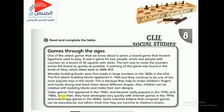The last game is video games — and all of us love video games. Video games first appeared in the 1950s and became really popular in the 1970s and 1980s. Since then, they've developed quickly, with Internet games in the 1990s and mobile app games in the 2000s. Some scientists believe that computer games can be educational, but others think they are harmful to children's brains, causing issues like autism and distracting students' minds.